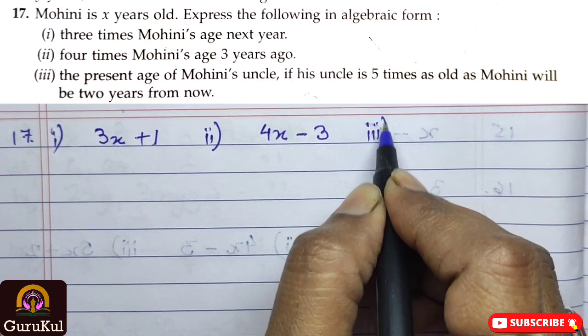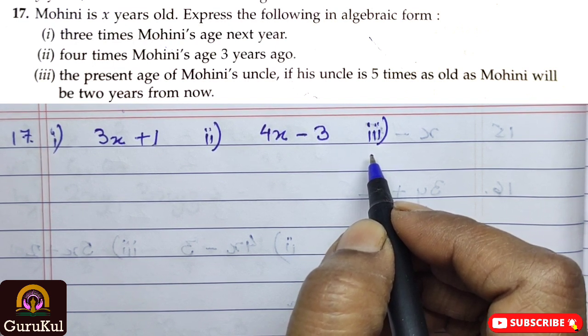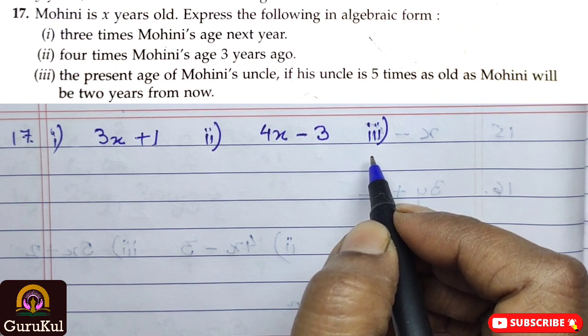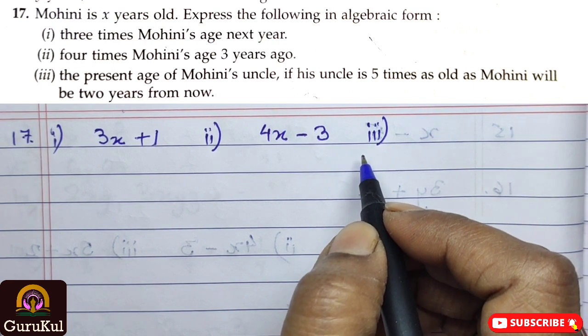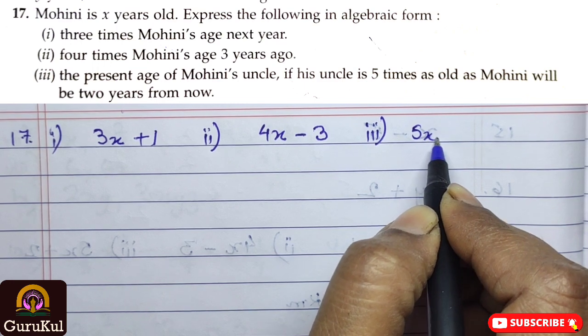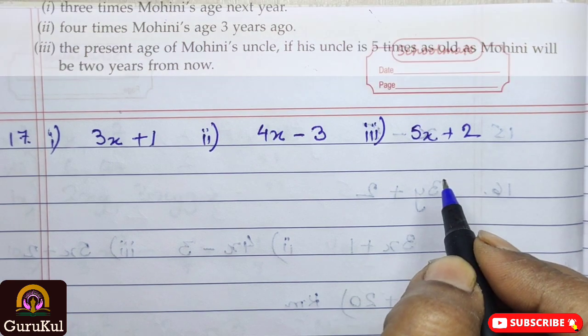And third part, it says the present age of Mohini's uncle. If his uncle is 5 times as old as Mohini will be 2 years from now. So, 5 times as old as Mohini, that means 5x and that 2, 2 years from now, that means plus 2.